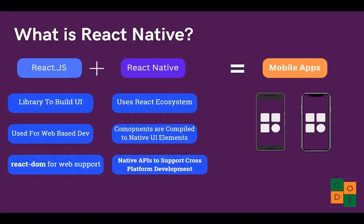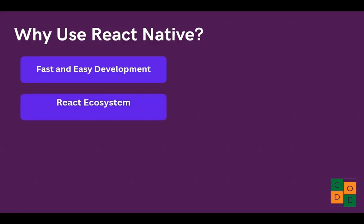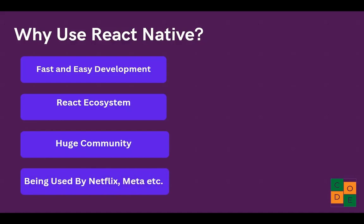So why should we use React Native? Because the development is very fast and easier compared to other libraries. It uses React as an ecosystem, which is a standard, and there is huge community support as well. So if you are facing any issues in production or development, there is a huge community you can get support from. Big companies like Netflix, Meta, and Instagram are also using it because the UI is very fast and easy to develop with React Native.